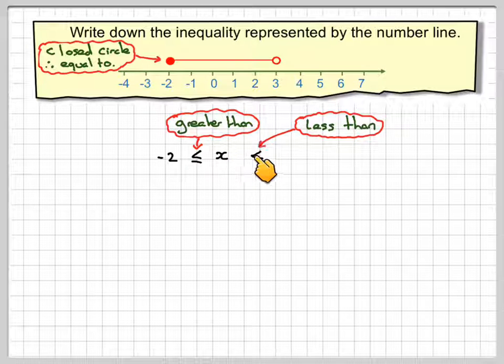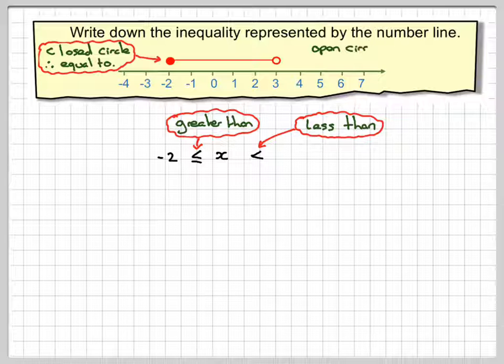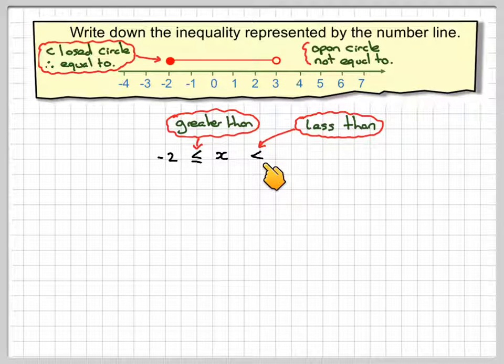So that less bit needs to go here, greater bit needs to go here. The circle is open, therefore we don't put an equal sign in and then we put in the number.